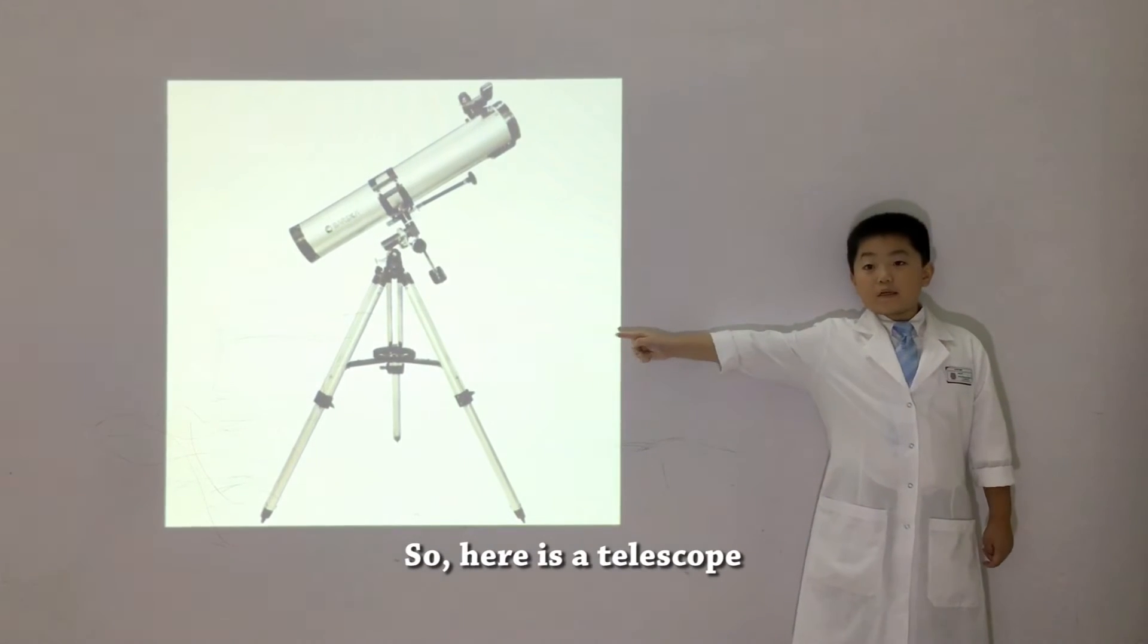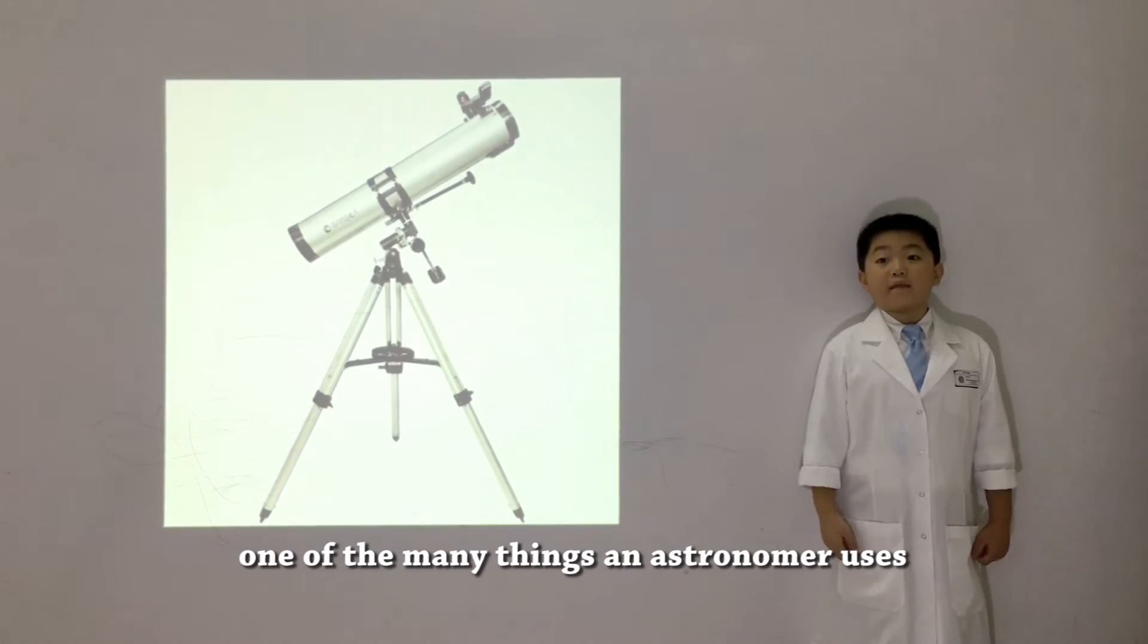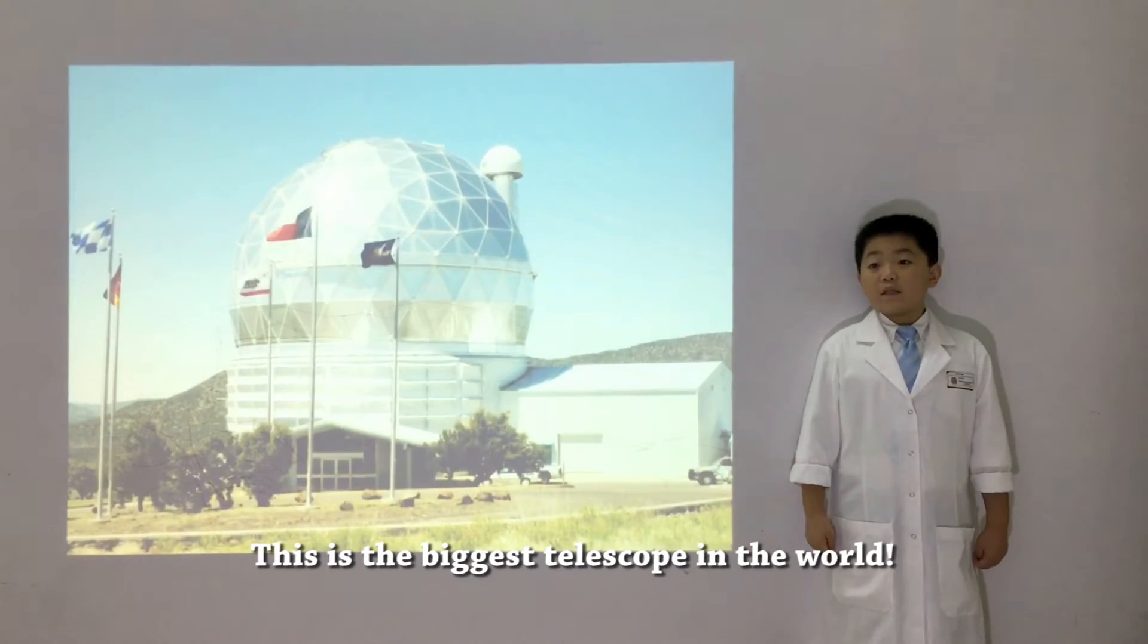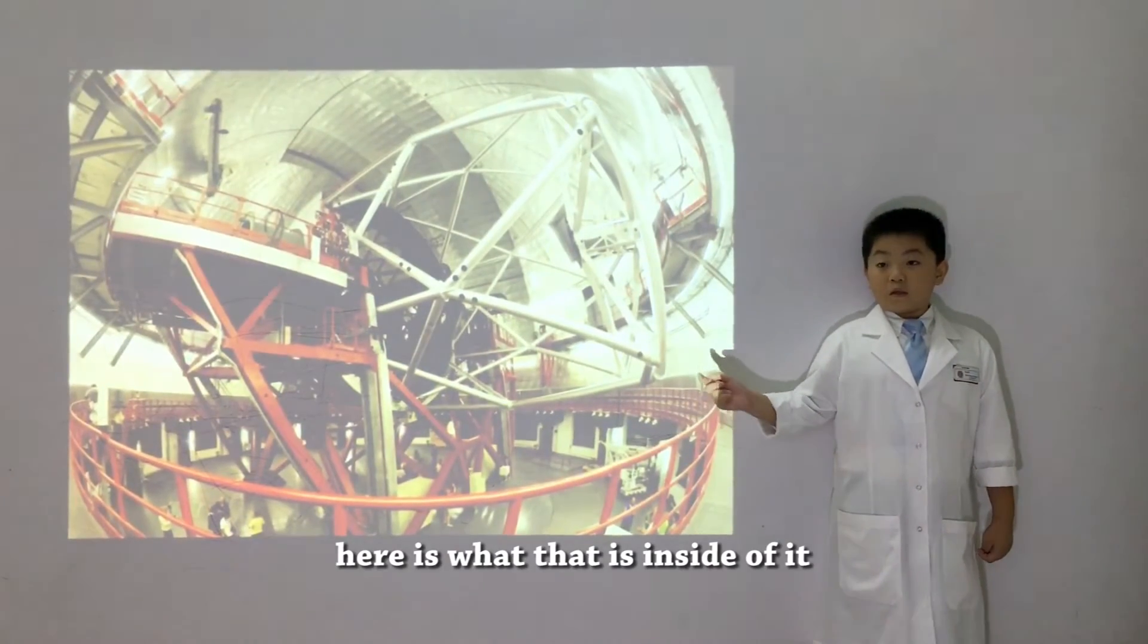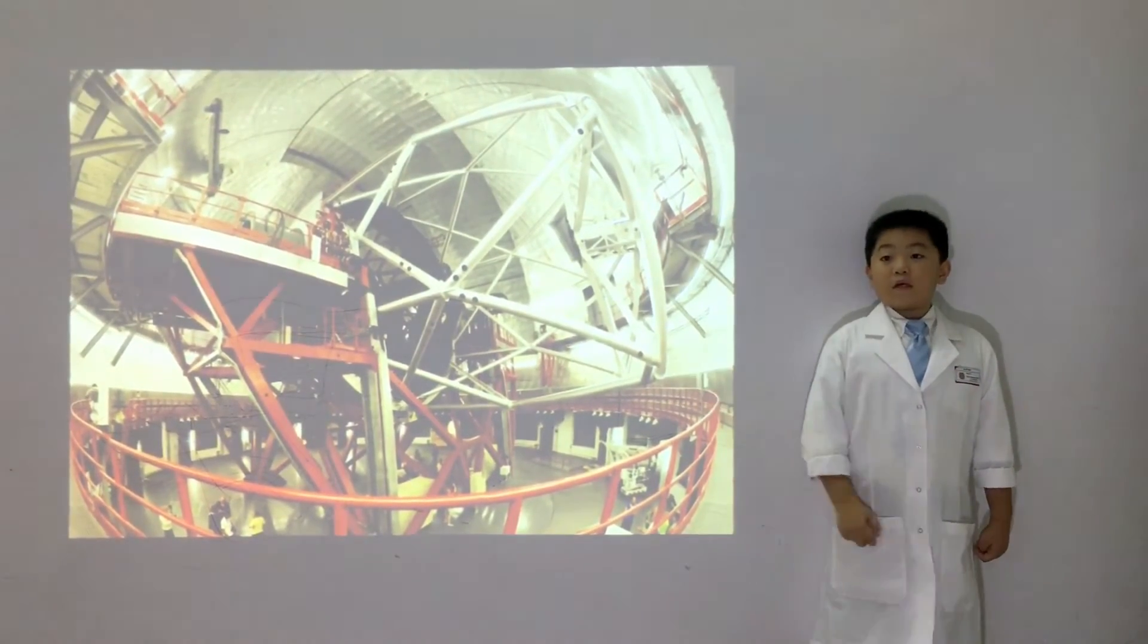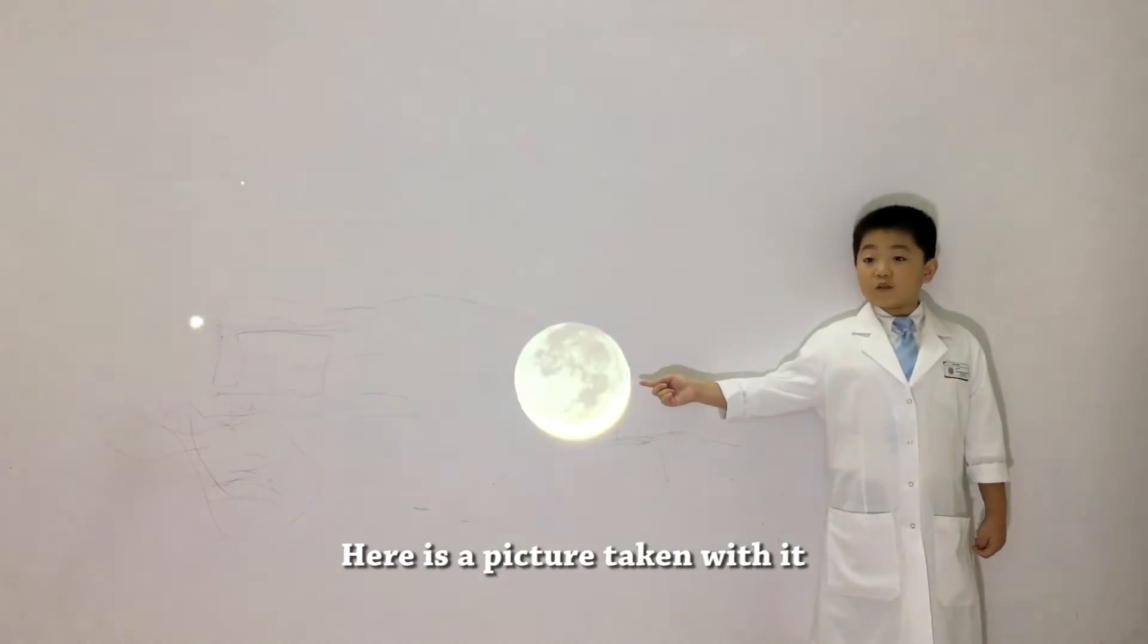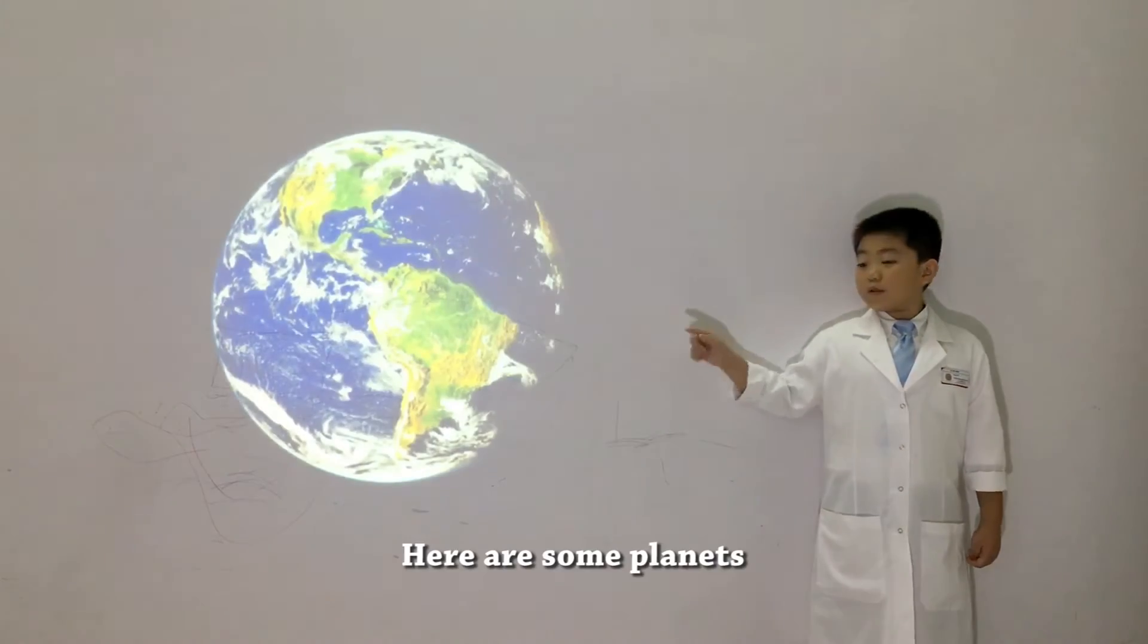So, here's a telescope, one of the many things an astronomer uses. This is the biggest telescope in the world. I once went there. Here is what is inside of it. Here is a picture taken of it. Here are some planets.